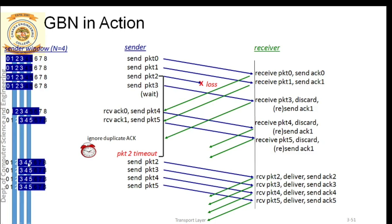All 4 packets are transmitted to the receiver, since the window size is 4. The next expected packet at the receiver was sequence number 2. This time, packet 2 is received correctly, followed by packet 3, packet 4, and packet 5 — all in order. The receiver accepts them, delivers them to the application layer, and sends back acknowledgements 2, 3, 4, and 5.